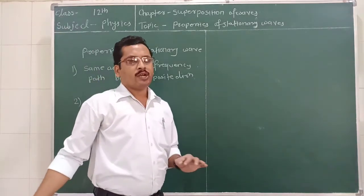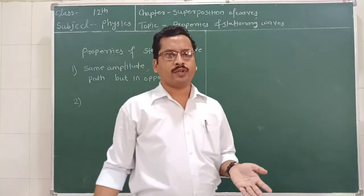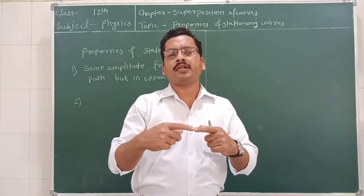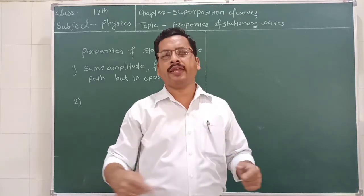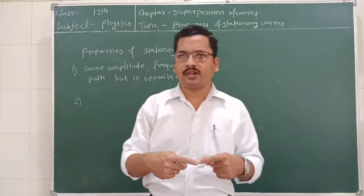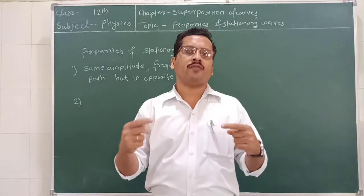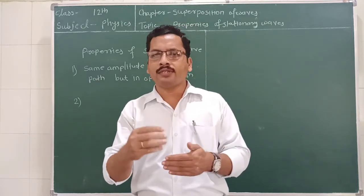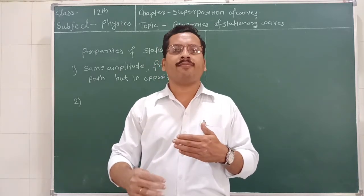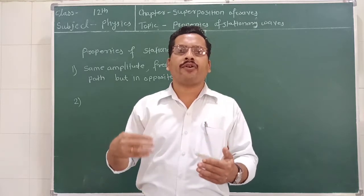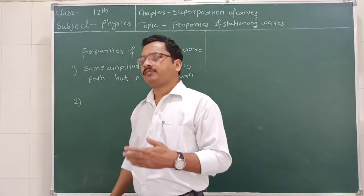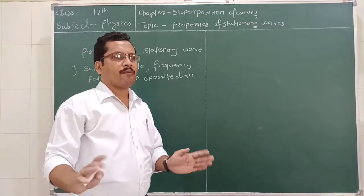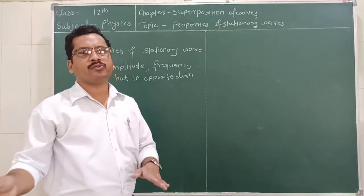As we know, there are two types of waves: longitudinal waves and transverse waves. If two longitudinal waves recombine with each other, they form longitudinal stationary waves. And if they are transverse waves, they form transverse stationary waves. So it depends upon which type of waves are going to recombine. This is the second property — stationary waves are divided into longitudinal stationary waves and transverse stationary waves.